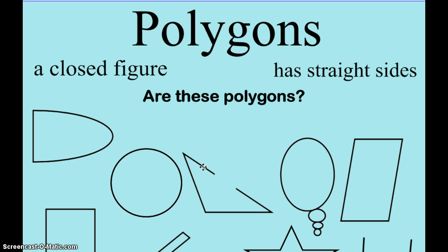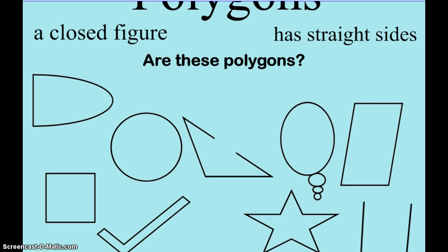So let's look at a few examples of what might be and what might not be a polygon. A closed figure with straight sides. Well this is a closed figure, it doesn't have any openings, but it has a curved side so it does not count as a polygon.